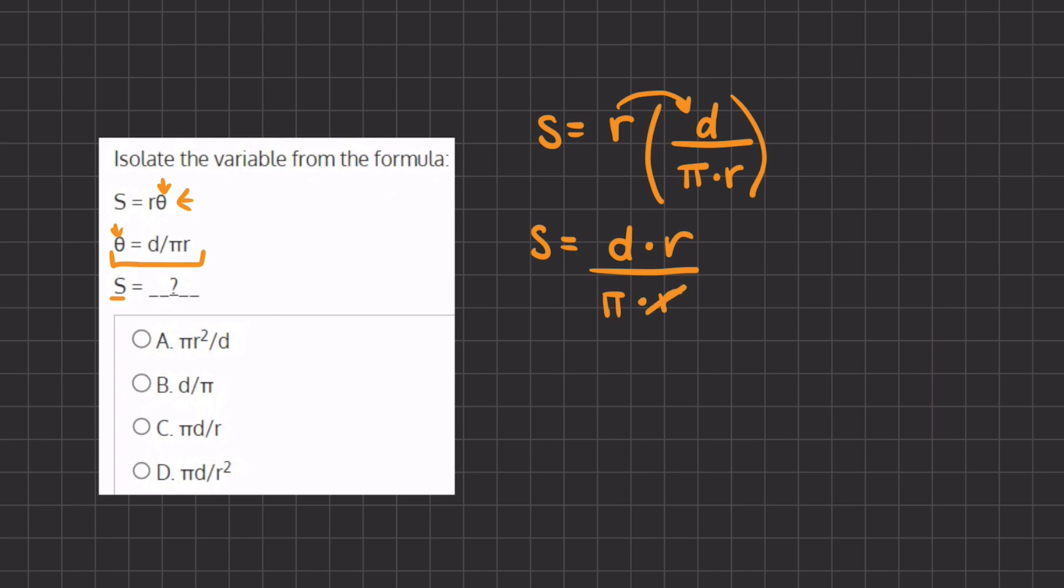And now we can eliminate these r's because they are on the numerator and denominator. And we are left with s equals d divided by pi.